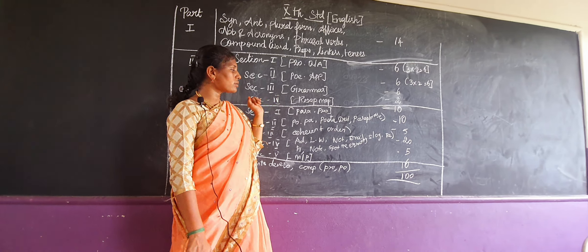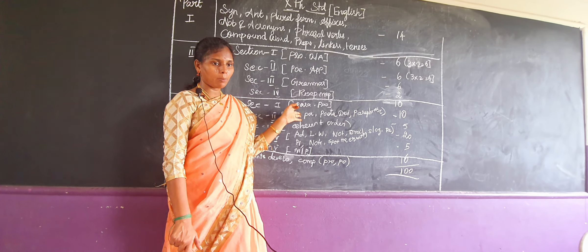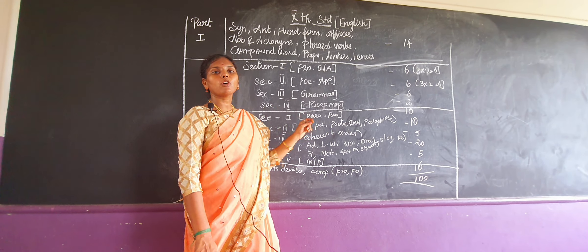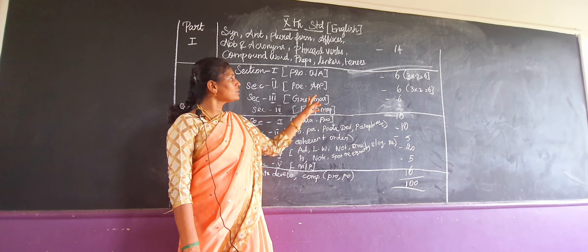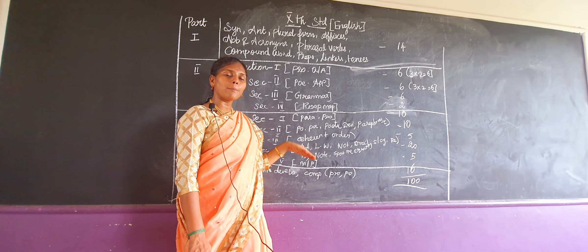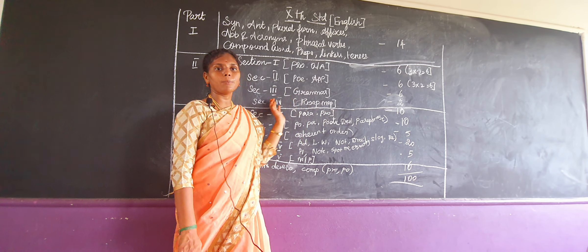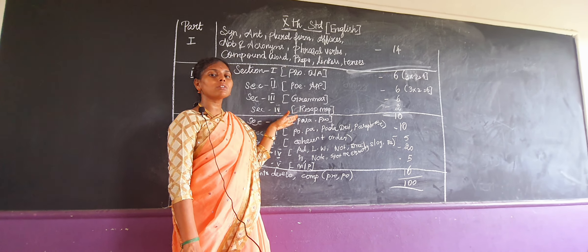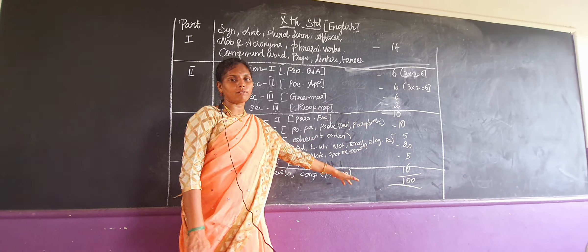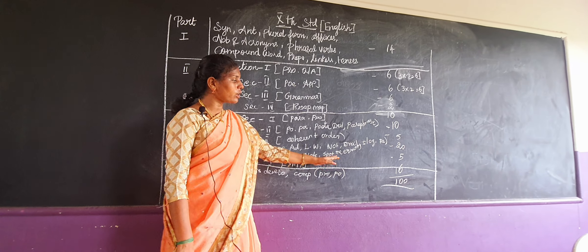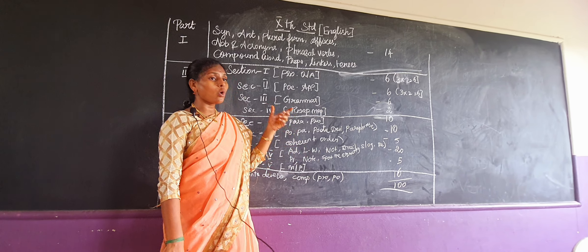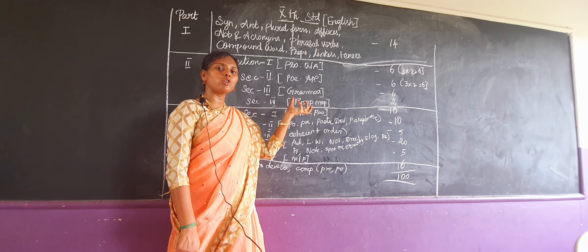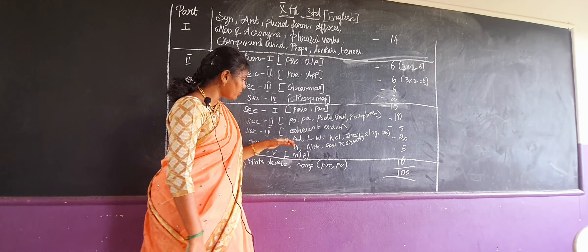Next is error finding — they will give 5 sentences, and you have to find out which one has an error and write it. That completes Section 4.